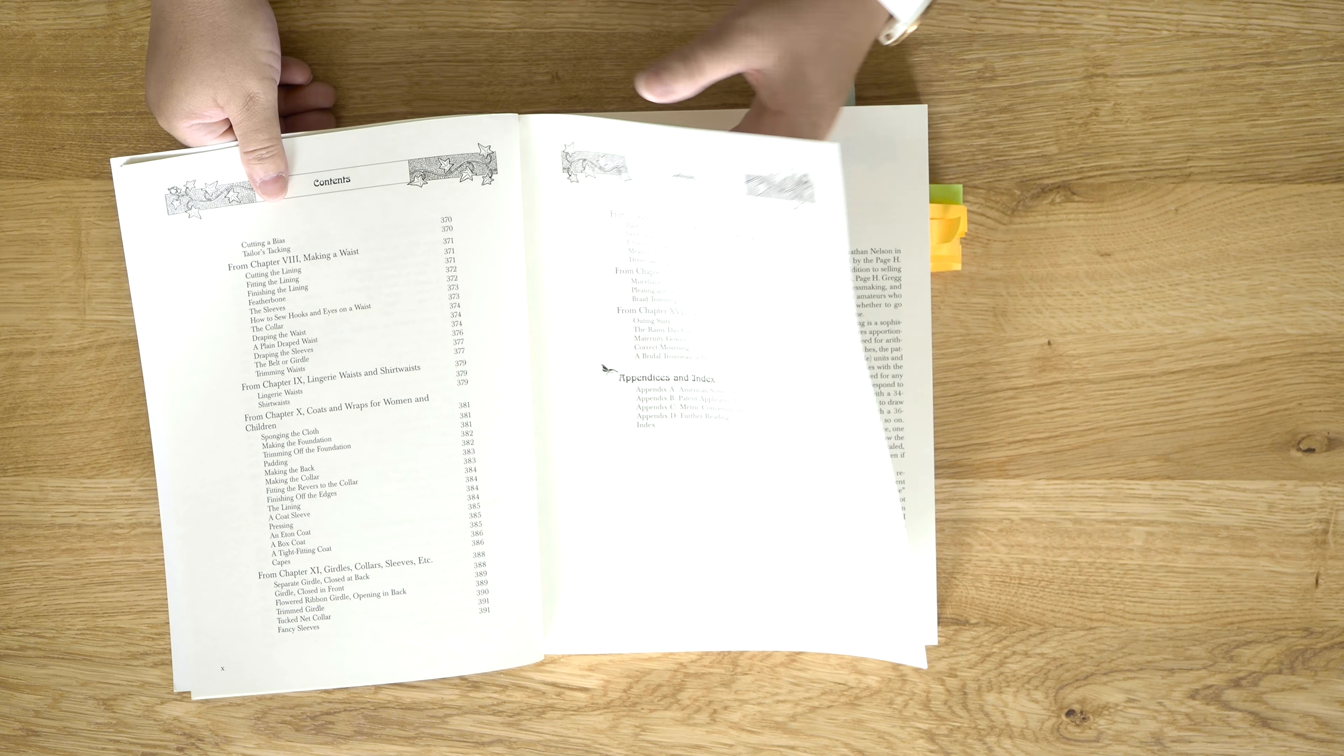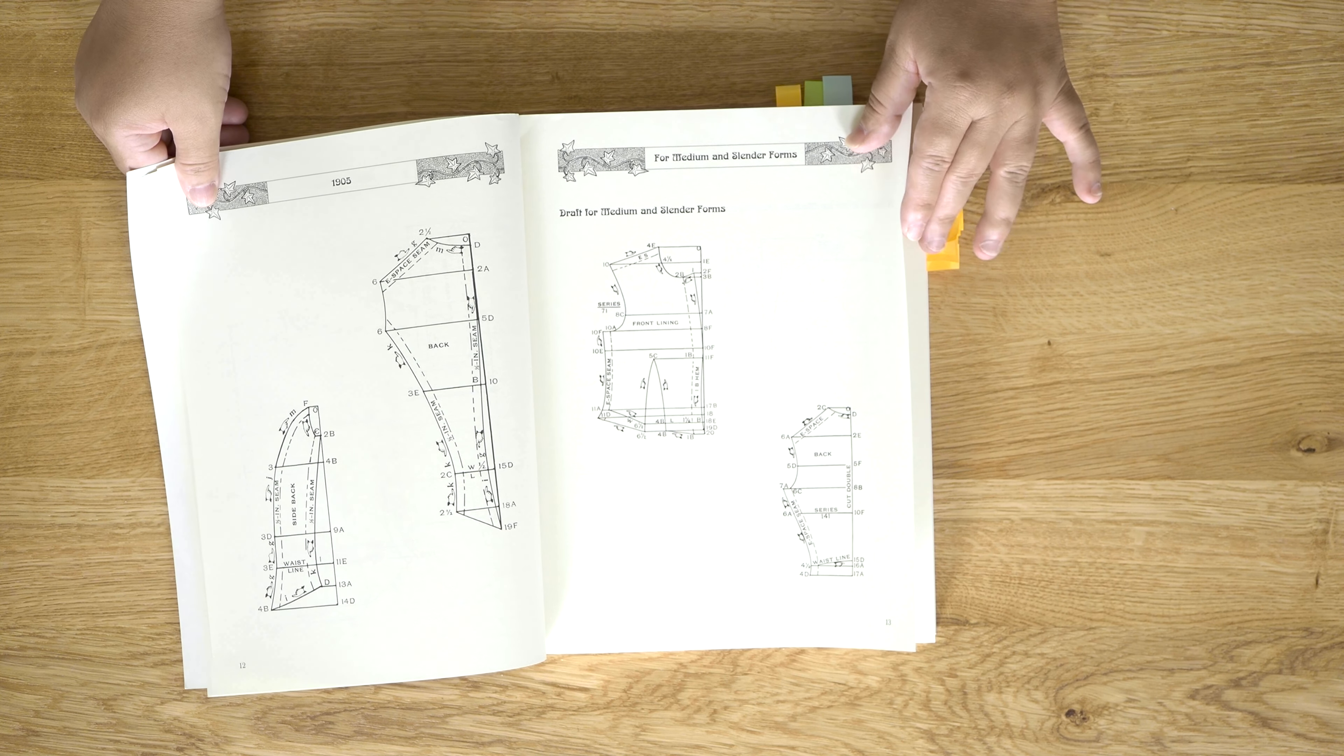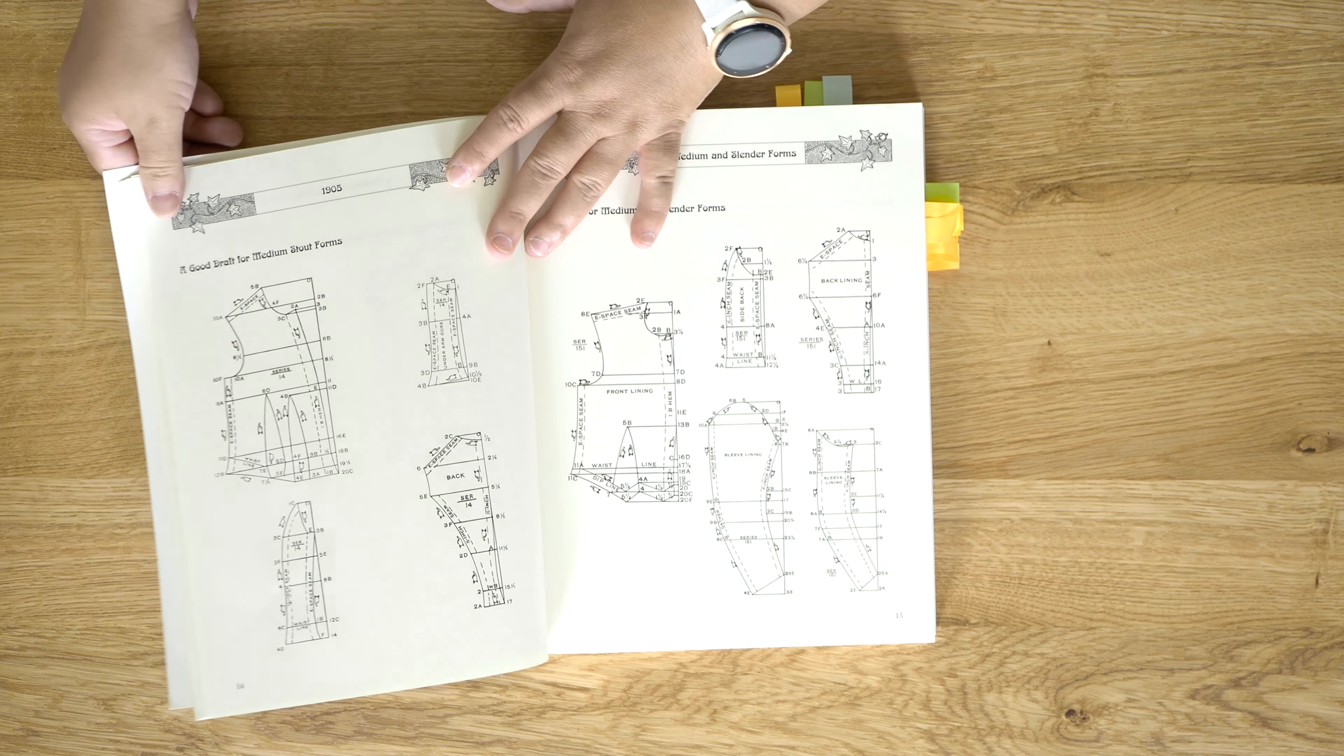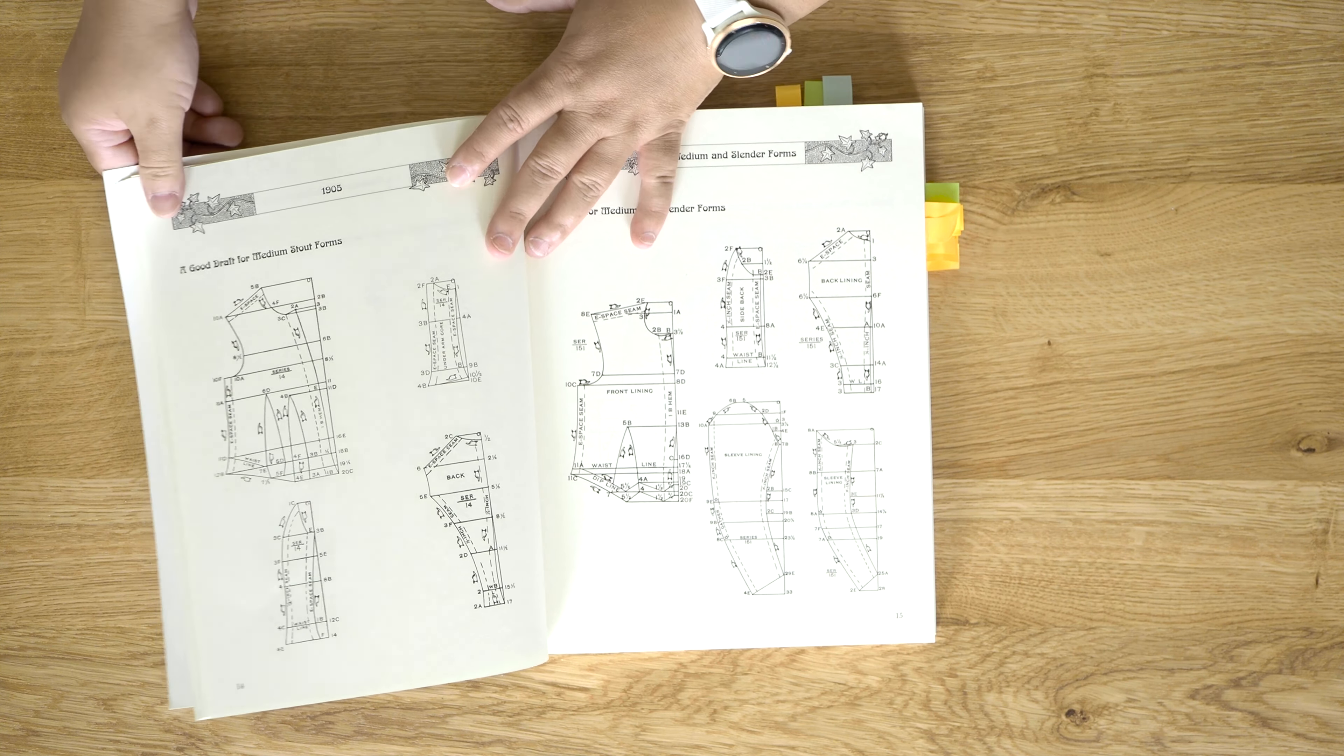Moving deeper into the 20th century in the Edwardian period, we have the Edwardian Modiste, also by Frances Grimble. This book has patterns from around 1905 to 1909. This book is a little different even though it is still an apportioning system. Unlike the Voice of Fashion and the other apportioning systems, this book uses two measurements, well actually three, but let me explain. It uses your waist measurement and length of waist measurement to draft.